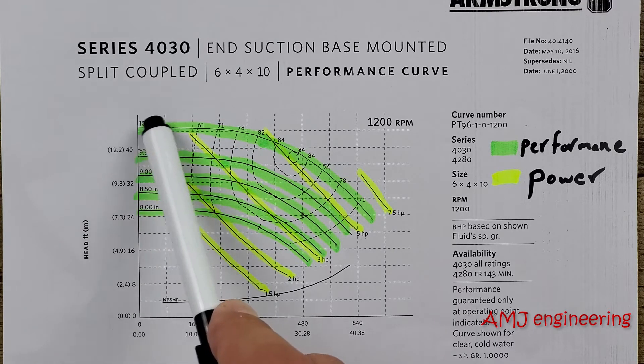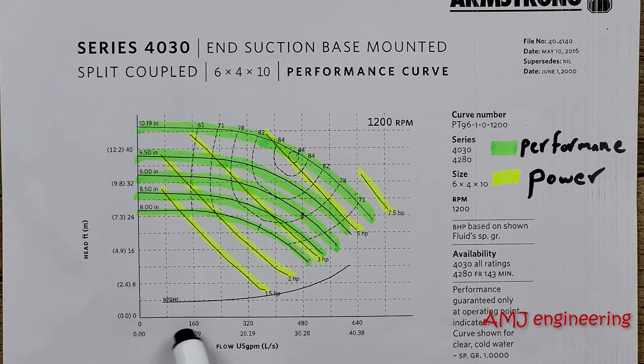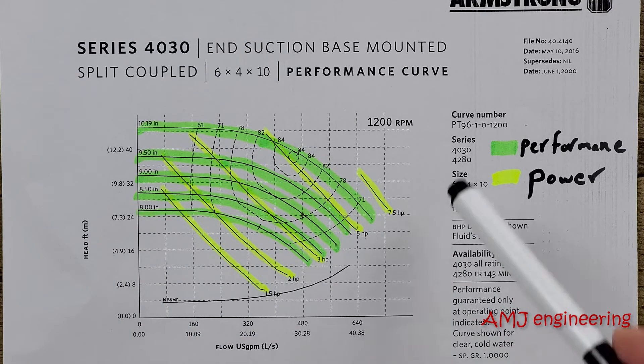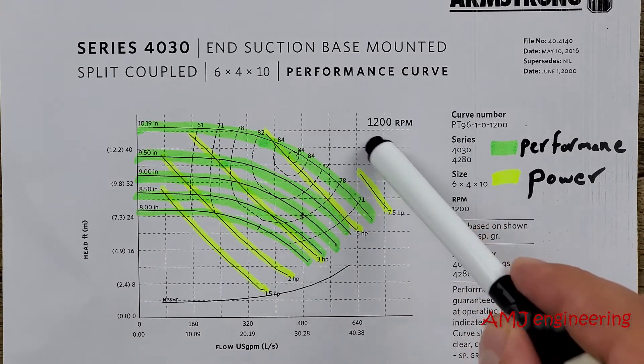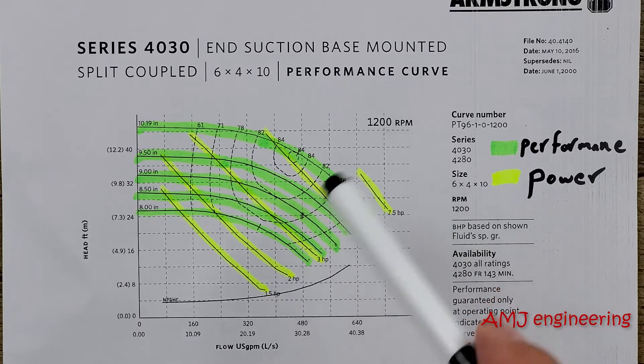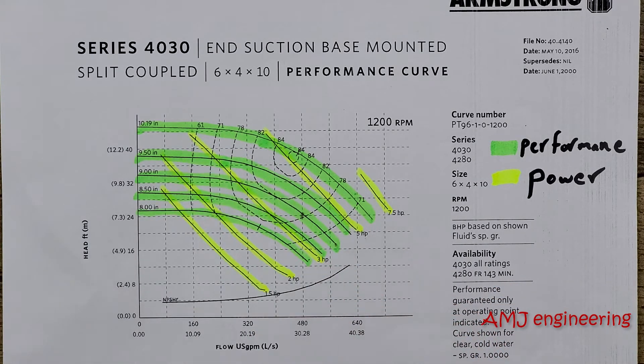A pump performance curve indicates how a pump will perform in regards to pressure head and flow. A curve is defined for a specific operating speed and a specific inlet outlet diameter. In our example here, these curves show the performance at 1200 RPM for a 6 by 4 inches inlet outlet diameter.